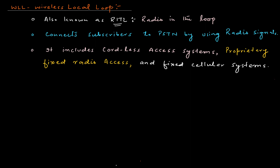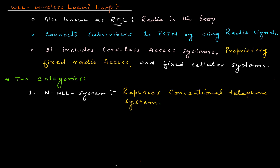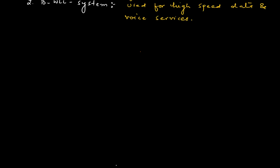WLL has two broad categories. Number one, you have Narrowband WLL System, that is N-WLL System, which replaces your Conventional Telephone System. The second one is Broadband WLL System, or B-WLL System, which is used for high-speed data and voice services.